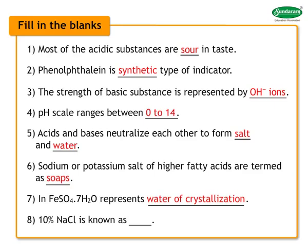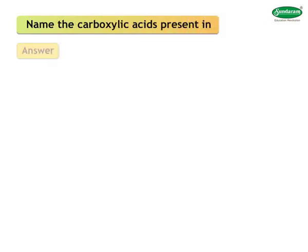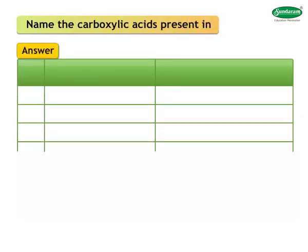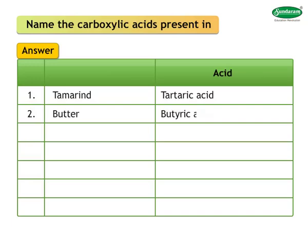Eight: ten percent NaCl is known as brine. Name the carboxylic acids present. Answer: One — tamarind contains tartaric acid. Two — butter contains butyric acid.